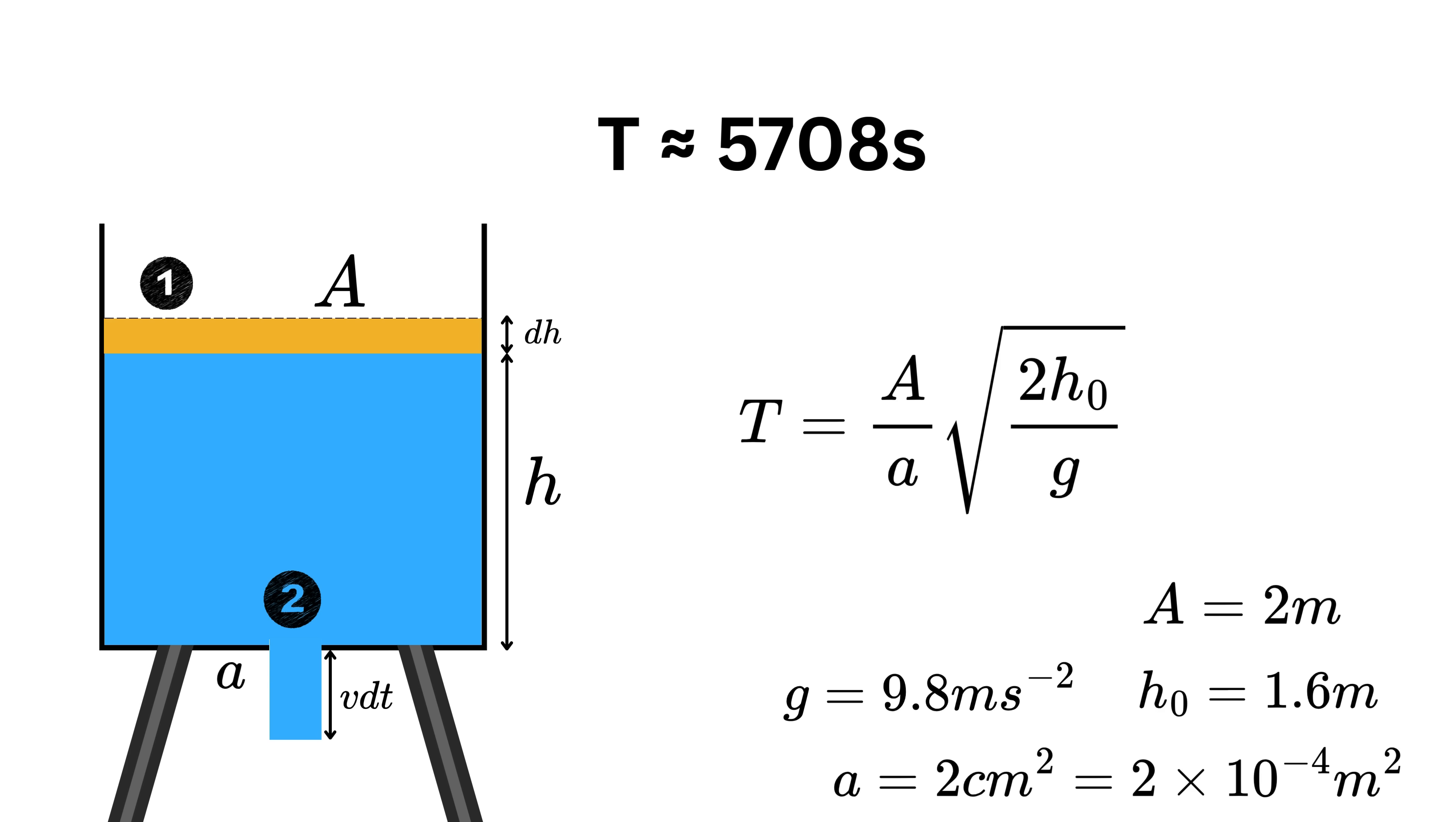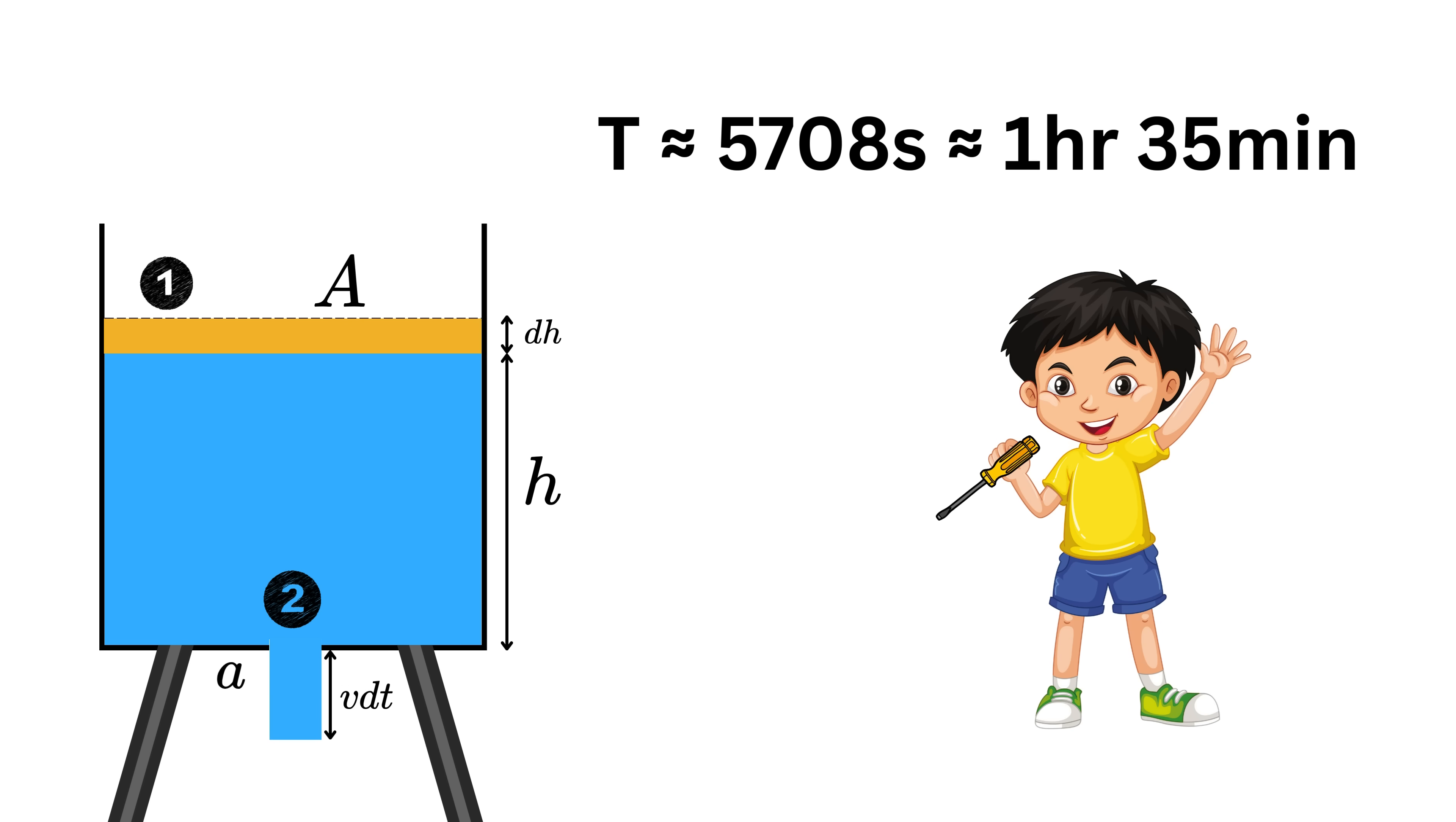Substitute these values to get t as nearly 5708 seconds, or 1 hour and 35 minutes. So that's exactly how long the naughty kid has to make his great escape before someone finally climbs up and catches him red-handed.